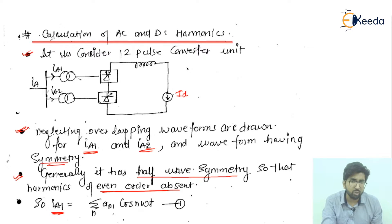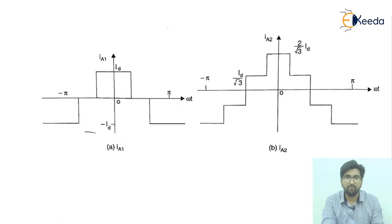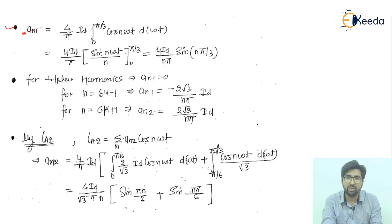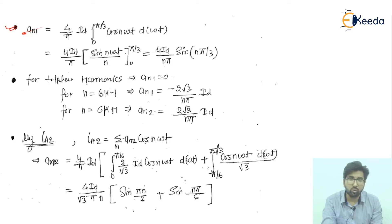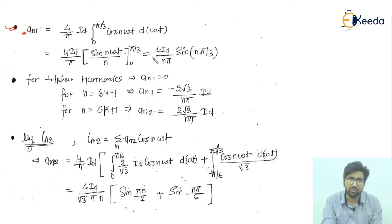From these waveforms we can write Ia1 = Σ an1 · cos(nω₀t), which is equation number one. The coefficient an1 = (4/π) · Id · ∫₀^(π/3) cos(nωt) d(ωt). After integration from 0 to π/3, putting in the values gives an1 = (4·Id)/(nπ) · sin(nπ/3).